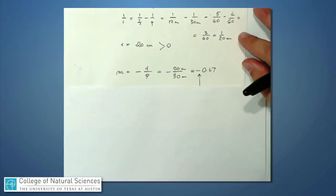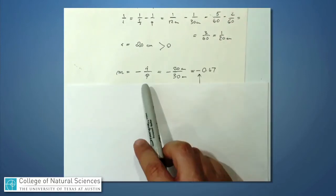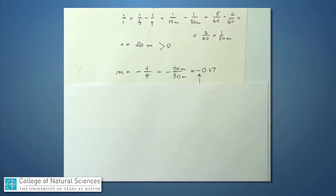And the magnification, which is always minus i over p, is minus 20 centimeters, which is the image distance, divided by 30 centimeters, which is the object distance, which is minus 0.67.